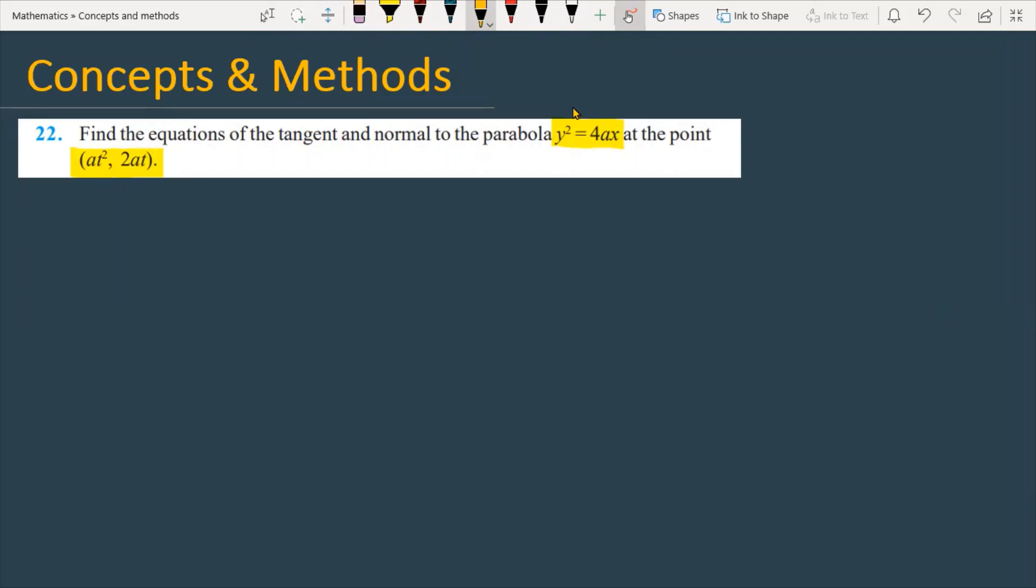First I will talk about the conceptual part of what is required for this question. Suppose you have a line passing through a point, and this line has slope m. The slope-point form of the line is y - y₁ = m(x - x₁).